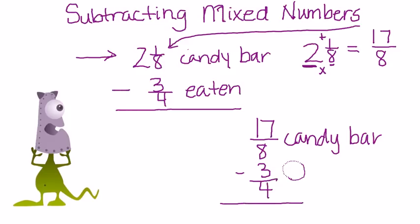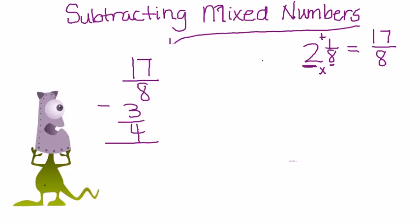And now notice that we have two fractions, one's improper, but we can now use our butterfly method. I'm going to use my butterfly. I'm going to go 17/8 minus 3/4.